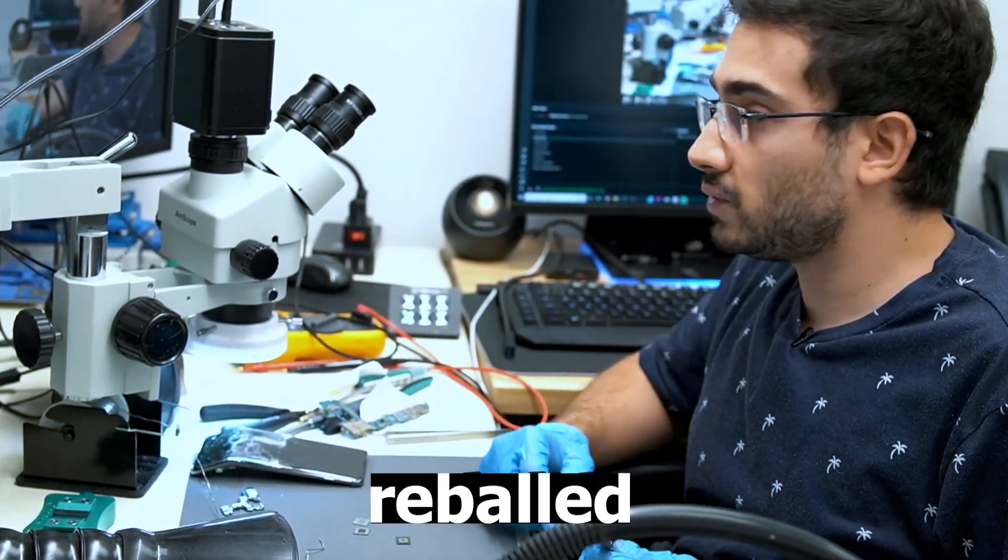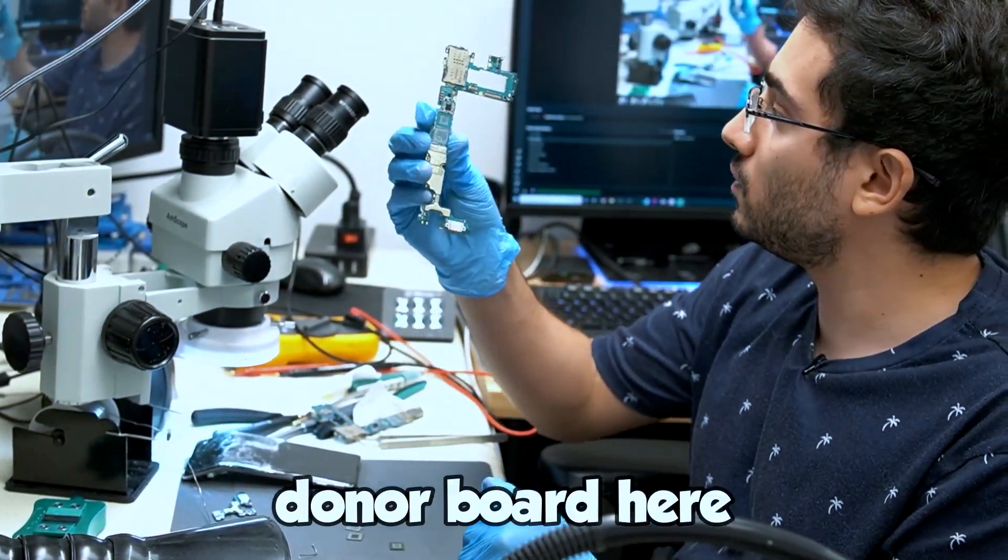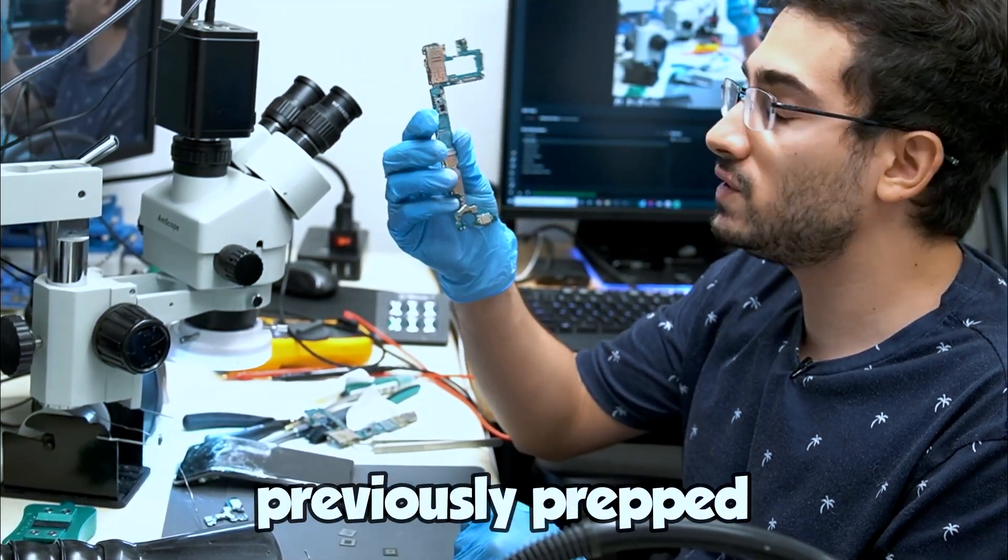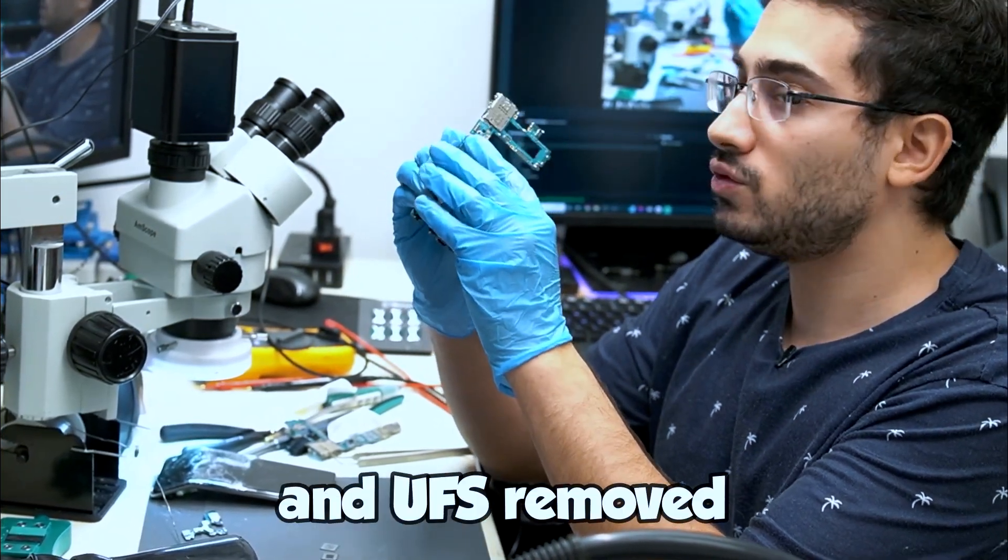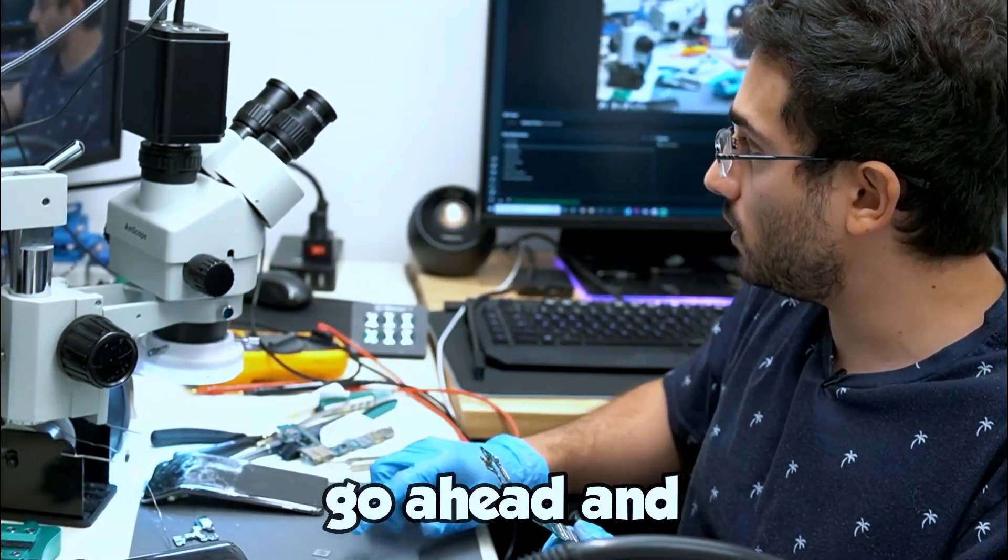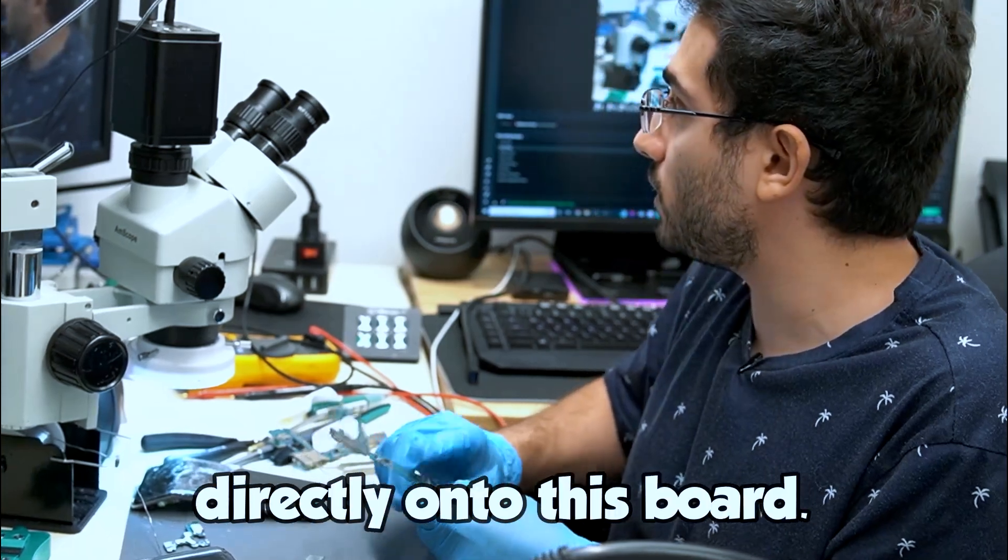So we have our three chips reballed. We have a donor board here. This is previously prepped for board swap. It has the CPU and RAM and UFS removed. So we can go ahead and install our customer chips directly onto this board.